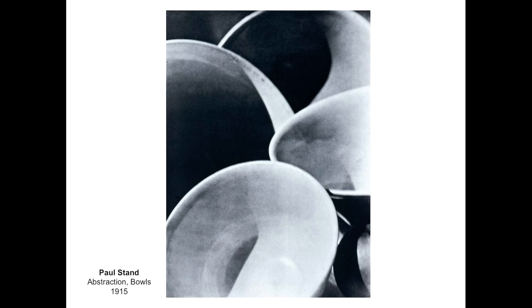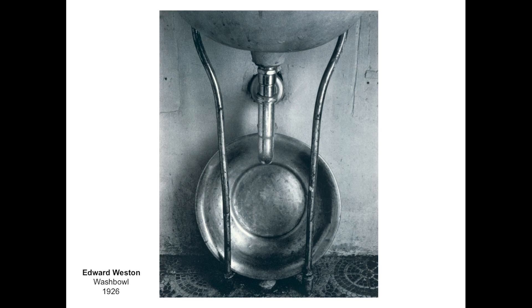Value is essentially tone — the amount of white or black in a color or tone. Here you can see the use of value to define the shapes — the ceramic bowls that Paul Strand photographed in 1915.